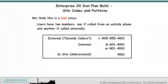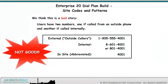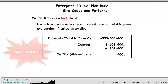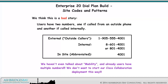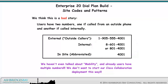We think this is a bad story: users have two numbers — one if called from an outside phone, and another if called internally. We haven't even talked about mobility, and already users have multiple numbers. We don't want to start our Cisco collaboration deployment this way.